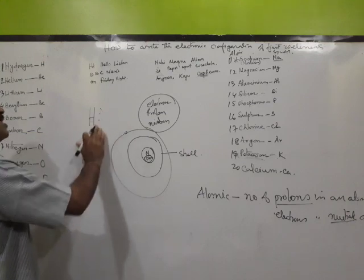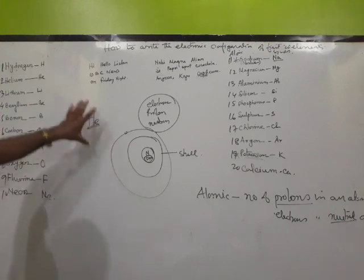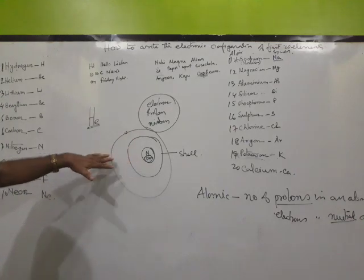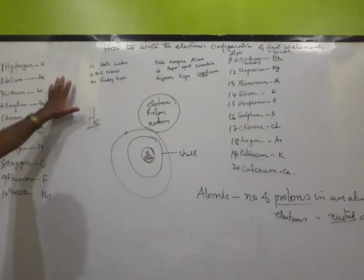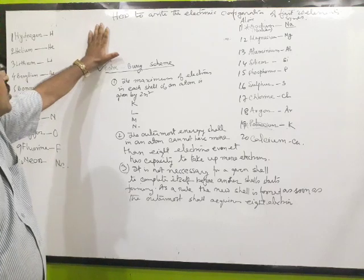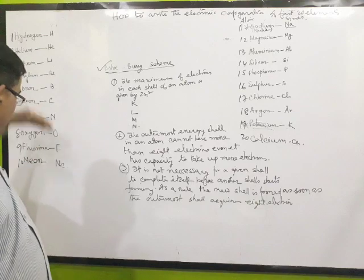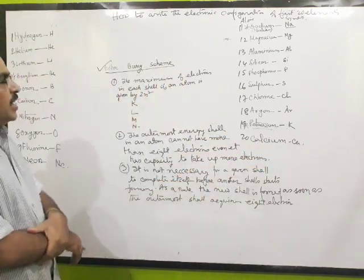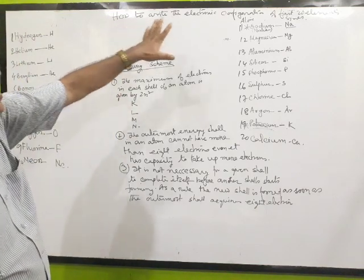The first letter of an element's symbol is written as a capital letter, and the second letter is written as a small letter.